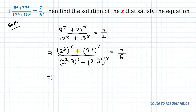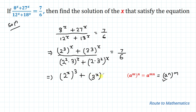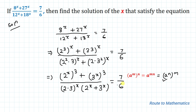In the next step we are going to apply the exponential law: a to the power m, whole to the power n, equals a to the power mn. Applying this rule, we can write 2 to the power x whole cubed, plus 3 to the power x whole cubed, divided by — in the denominator we can take 2 multiplied with 3 whole to the power x, multiplied with 2 to the power x plus 3 to the power x — equals 7 by 6.